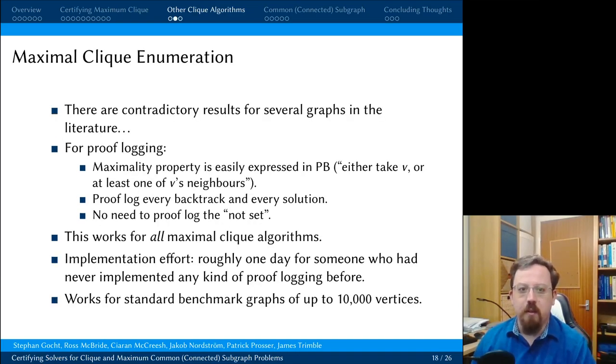We also look at the maximal clique enumeration problem. So find me all the cliques that cannot be made bigger by adding at least one vertex. And there are contradictory results for maximal clique enumeration in the literature. People disagree upon what the answer for various instances is. For proof logging, we need a way of expressing maximality in pseudo-boolean form. This is easy. We just say either you take a vertex v or you have to take at least one of its neighbours. We proof log every backtrack and every time we find a solution. And there is no need to proof log anything for maximality. These algorithms use something called a NOT-SET, which is a very clever data structure for checking maximality. It turns out that reverse unit propagation is strong enough to figure out what the NOT-SET is doing without us having to help.